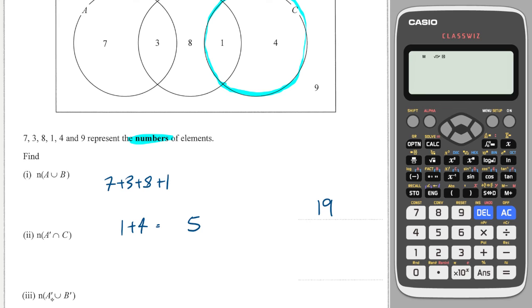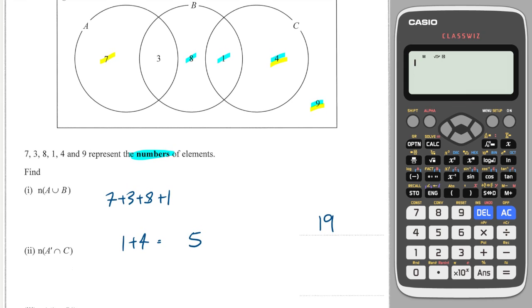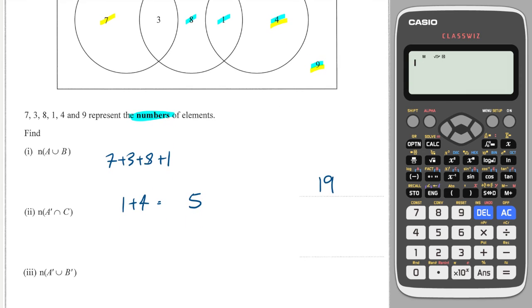And next we have the number of elements which are not in A or not in B. So the union are all of the elements which we've just shaded there. Because those elements are either not in A or not in B. And to be in the union, you just need to satisfy one condition. So either or is acceptable. So we have 7 plus 8 plus 1 plus 4 plus 9, which is 29.